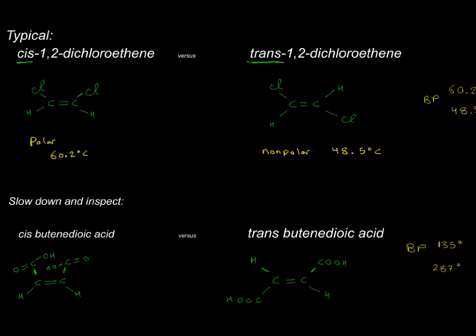But you also have to be able to justify anomalies and things that do not go where they should. So, sometimes you have to slow down and inspect the molecule. If I give you cis-butenedioic acid versus trans-butenedioic acid, this is a carboxylic group and a carboxylic group. Since we have two of them, we can call it dioic. And this is butene because you have two carbons. In this case, the typical trans should be lower. However, in this case, trans has a higher boiling point.